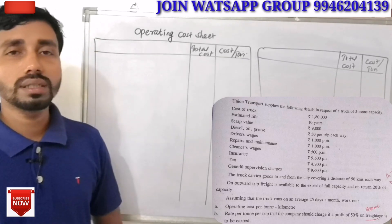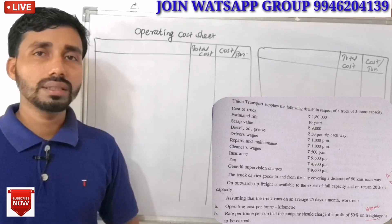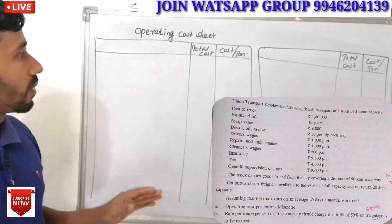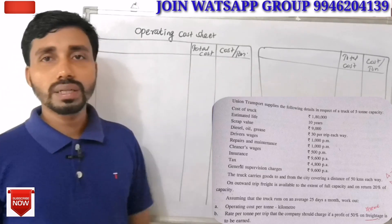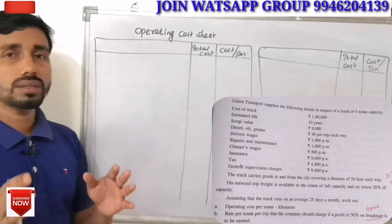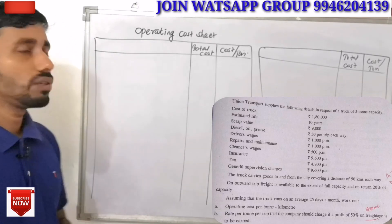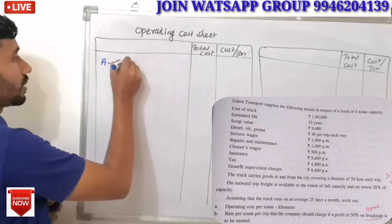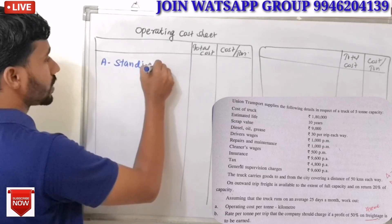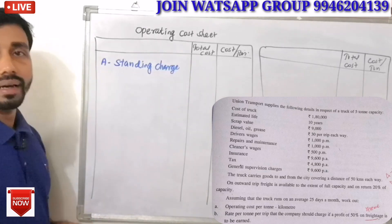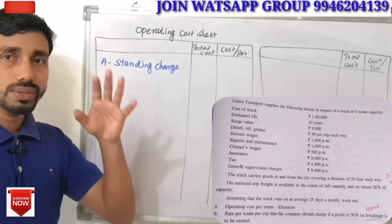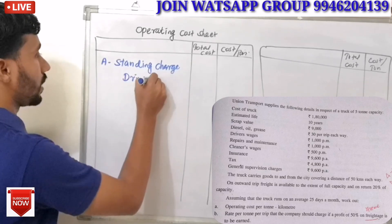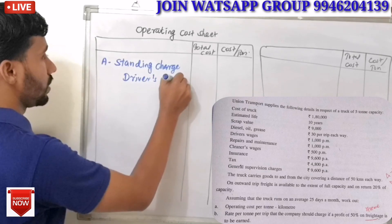We are going to discuss the operating cost sheet. First, we will calculate the fixed charges. Driver's wages are fixed charges. The driver's wages amount to 1,000.